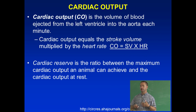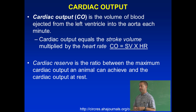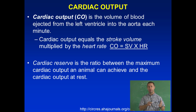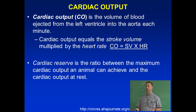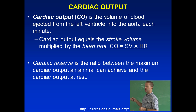Cardiac output is the amount of blood that an animal is moving through the circulatory system in one minute, and it changes depending on whether the animal is resting or exercising. Cardiac output is the product of stroke volume multiplied by heart rate.